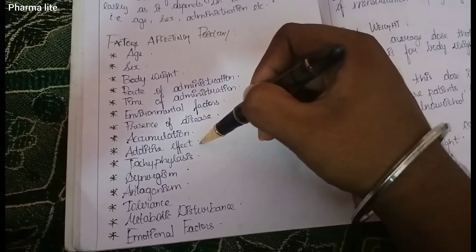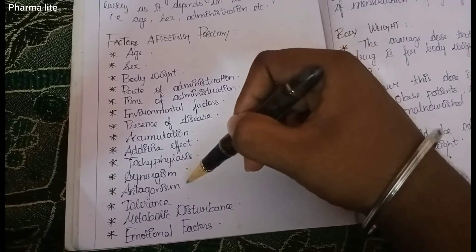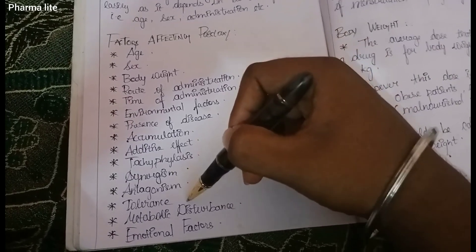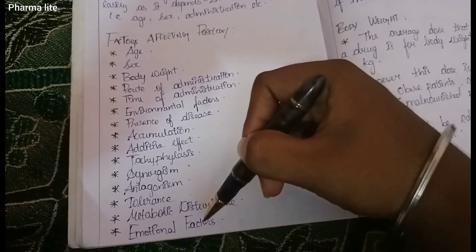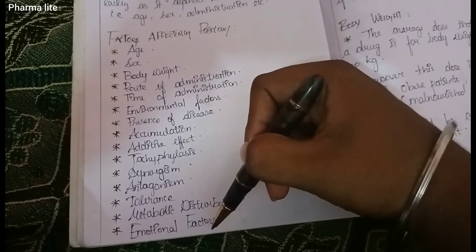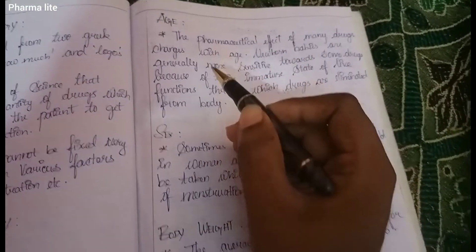Other factors include: additive effect, tachyphylaxis, synergism, antagonism, tolerance, metabolic disturbances, and emotional factors. Posology is defined by these various influencing factors. Posology is derived from the Greek word.